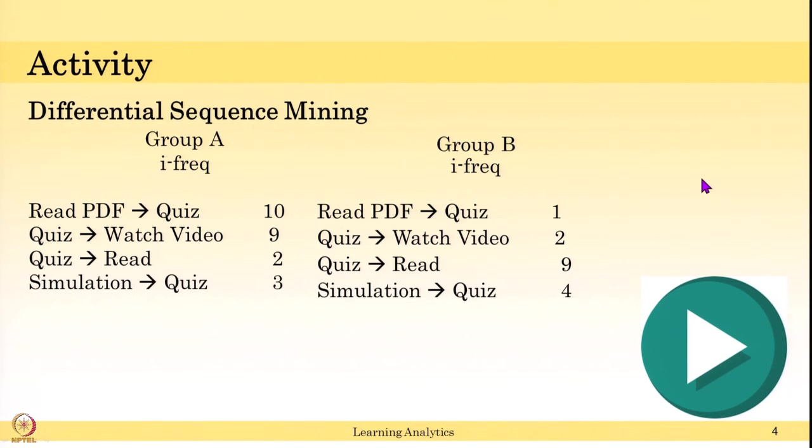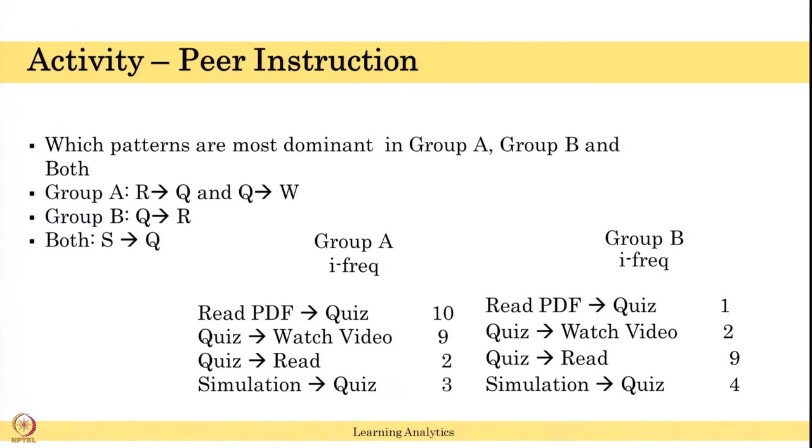After you list down, resume the video to continue. It is simple. Group A had a pattern Read to Quiz and Quiz to Watch Video - these two, 10 and 9 compared to this group. And Group B, Read to Quiz occurred more compared to Group A, and Simulation to Quiz occurred in both groups. This is the basics of differential sequence mining.